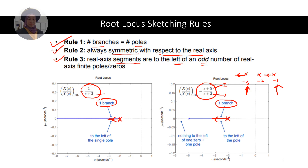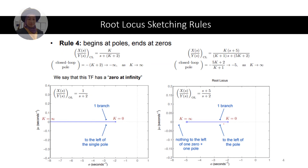Rule 4: the root locus will begin at poles and will end at zeros. In this first example, the root locus starts at the pole at minus 2 and ends at infinity (an infinite zero). In the second example, it starts at the pole at minus 2 and ends at the zero at minus 5.